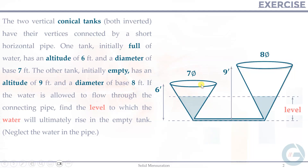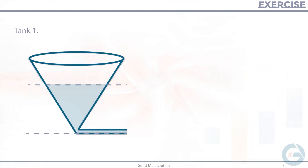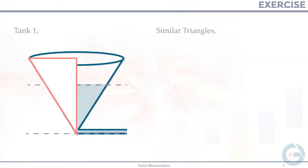The first tank is initially full. Water will flow through the connecting pipe and rise to a certain level. It will stop when the height of the water in the first tank is the same as in the second tank — that is the principle of communicating vessels. To calculate this problem, let's focus first on tank 1, using the concept of similar triangles.